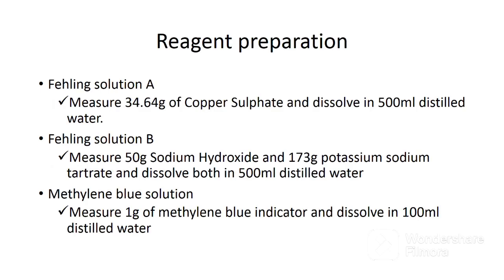Reagents must be prepared before doing the analysis. The first reagent to prepare is Fehling Solution A, which contains copper sulfate. To prepare this solution, measure 34.64 grams of copper sulfate and put it in a 500 ml volumetric flask. Add a small amount of distilled water and shake to dissolve all the crystals, then top up to the mark with distilled water.